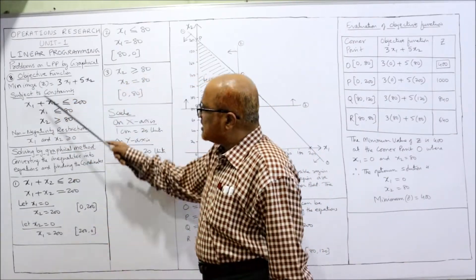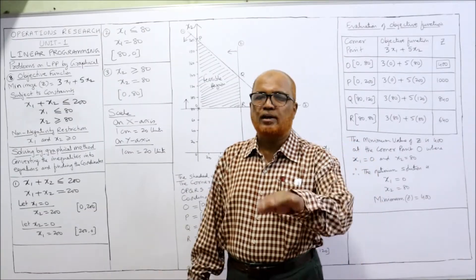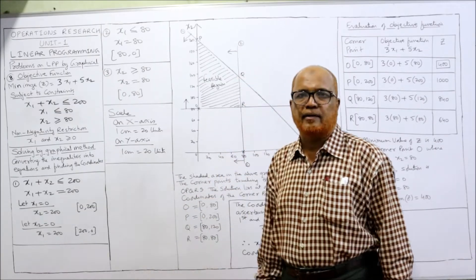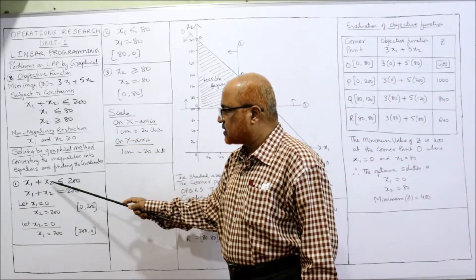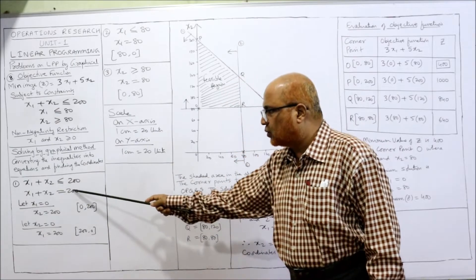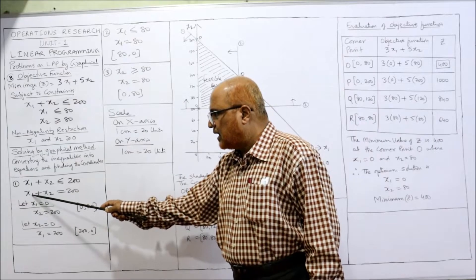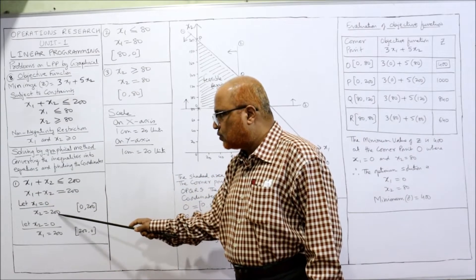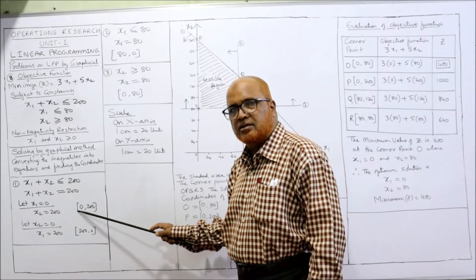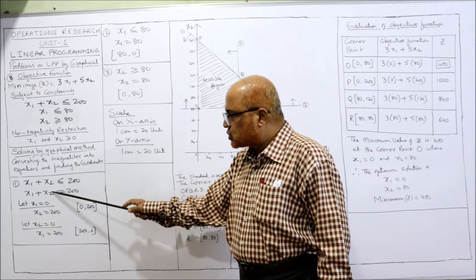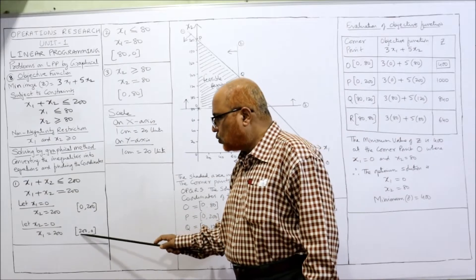Now we have to solve it by graphical method. First we convert the inequalities into equations to find out the coordinates. The first inequality is x1 plus x2 less than or equal to 200; we make it equal to, so x1 plus x2 equals 200. If x1 equals 0, then x2 becomes 200 — coordinates (0, 200). If x2 equals 0, then x1 becomes 200 — coordinates (200, 0).